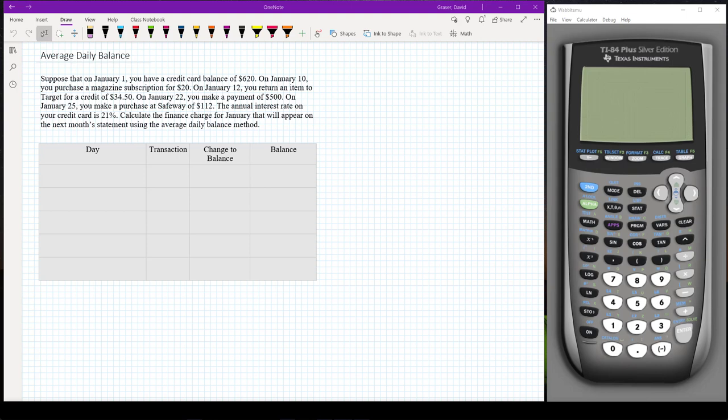So the key here is in order to be able to calculate an average daily balance, I need to know what the balance is on each and every day of the month, so from January 1st through January 31st. It says on January 1st I have a balance of $620.